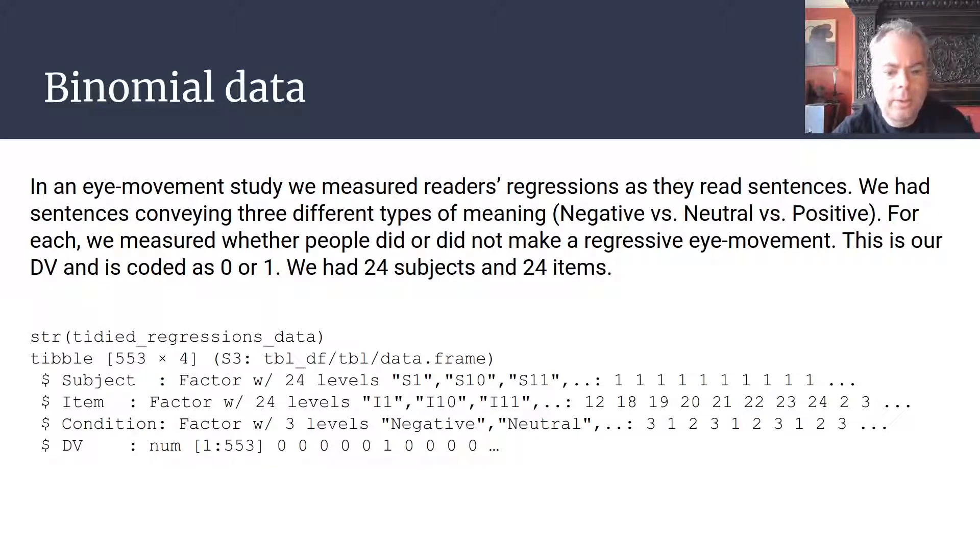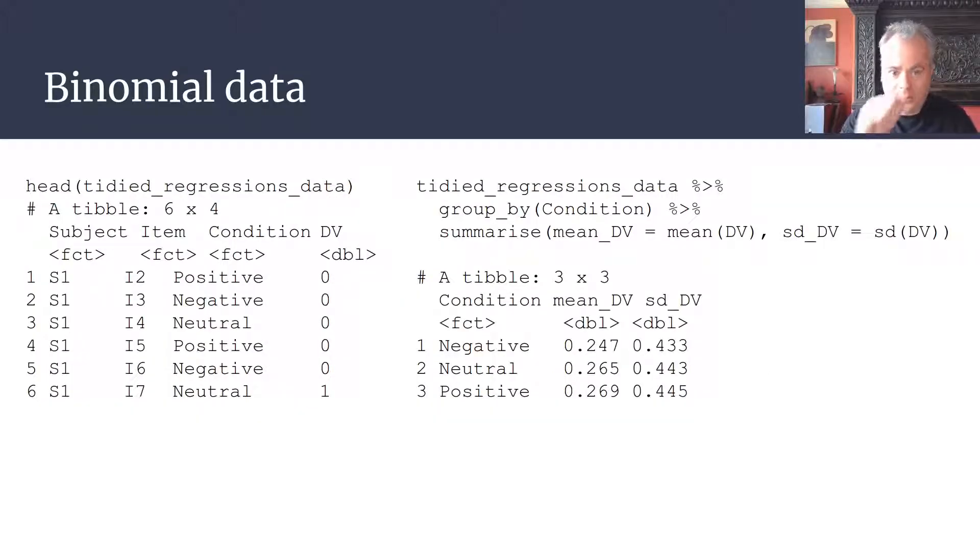Our dependent variable is coded as a zero or a one, and we can use the structure function just to check the structure of our data set. It's exactly as we're expecting. We can look at the first six rows of our data set if we want to, and then we can also calculate some descriptive statistics. We're taking our data set tidied_regressions_data, grouping it by condition, and working out the mean—the average for our dependent variable—and the standard deviation. We can see here the three means are relatively similar to each other, so we might on the basis of the descriptive statistics think that maybe we're not going to be finding too much of a difference between these three experimental conditions.